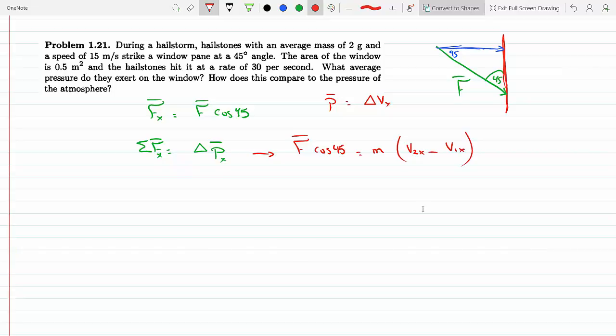But if this collision is elastic, then those two velocities would be the same, and the change in V_X would be V cosine 45, because it's going at a 45-degree angle. I need to pick up the cosine component of the velocity. So this would be V cosine 45 minus minus V cosine 45.